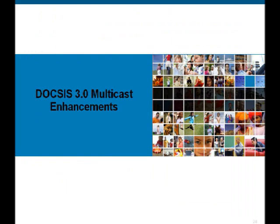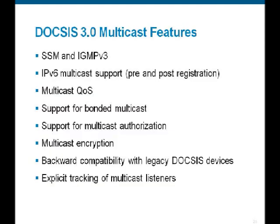Looking at multicast enhancements introduced in DOCSIS 3.0 relevant to video over DOCSIS: source-specific multicast with IGMPv3 support, IPv6 multicast support with MLD versions 1 and 2, standardized multicast QoS defining how to provide QoS for multicast streams in the cable access network, multicast authorization, and multicast encryption — which vendors like Cisco were using previously but which is now standardized in DOCSIS 3.0.